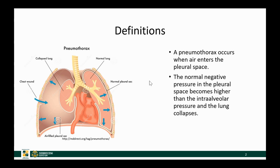There are two layers of pleura: one visceral, one parietal, and in between the two there is just a tiny amount of fluid which allows the two layers of the pleura to slide on top of each other. There is negative pressure within the pleural space and that allows the lung to expand completely.